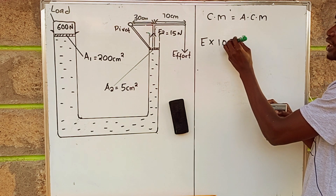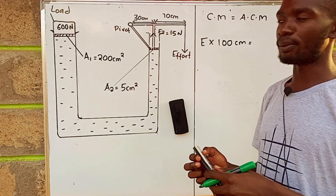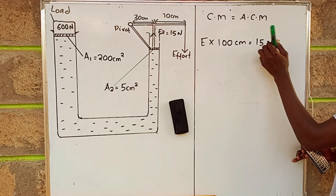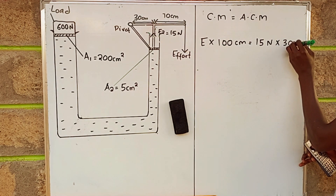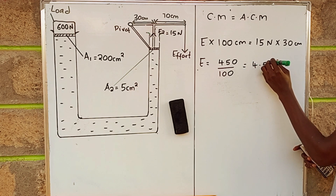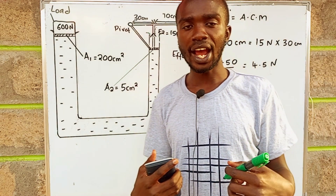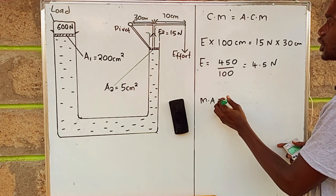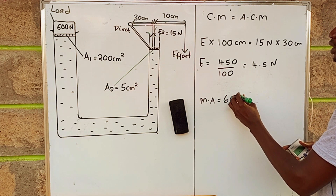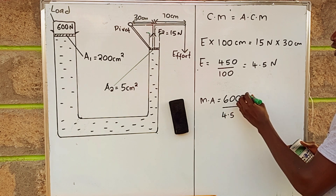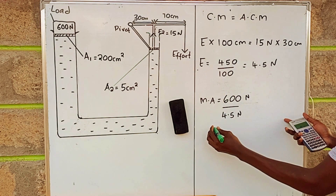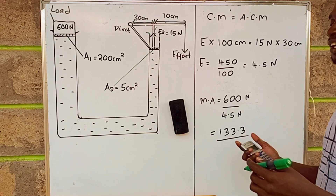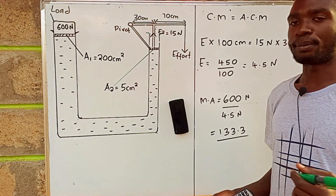That is 100 centimeters, equal to the anti-clockwise moment: the upward force of 15 newtons multiplied by its distance from the pivot, which is 30 centimeters, giving 4.5 newton-centimeters. Solving, the effort equals 4.5 newtons. So the mechanical advantage equals the load of 600 divided by the effort of 4.5, which gives 133.3. That is the mechanical advantage of the hydraulic press system.